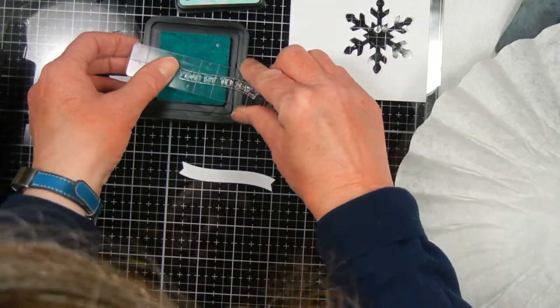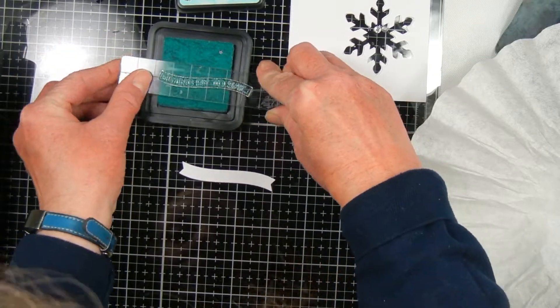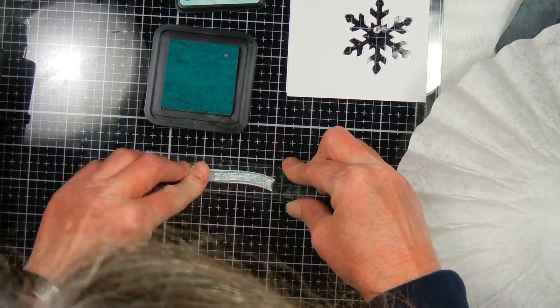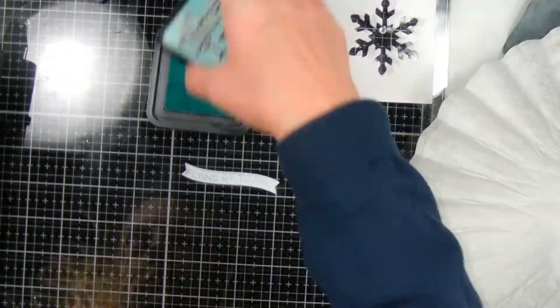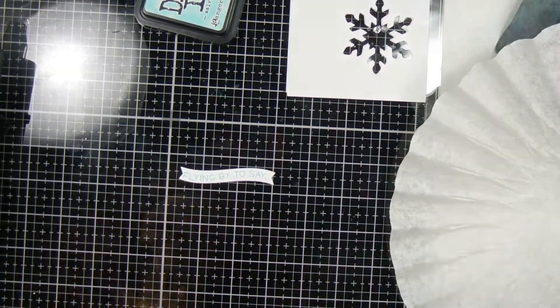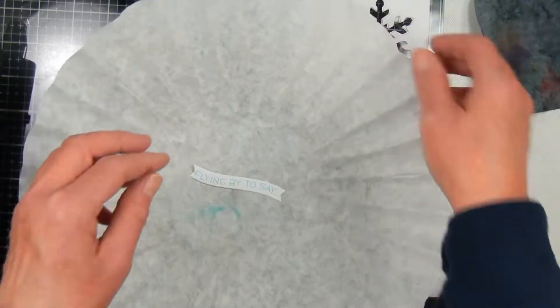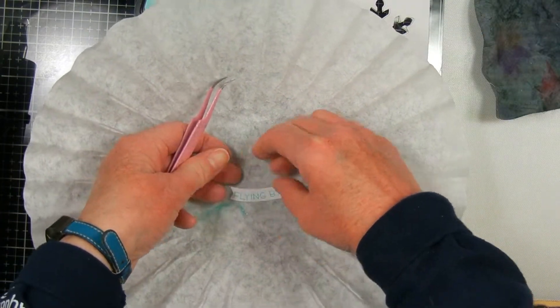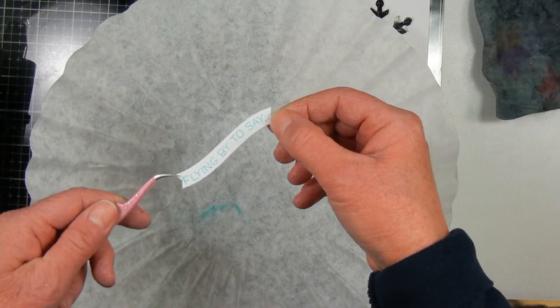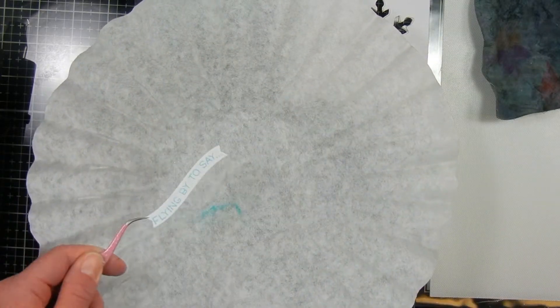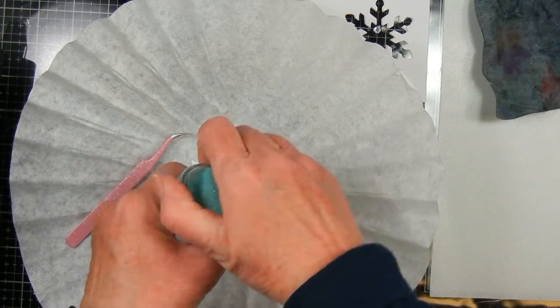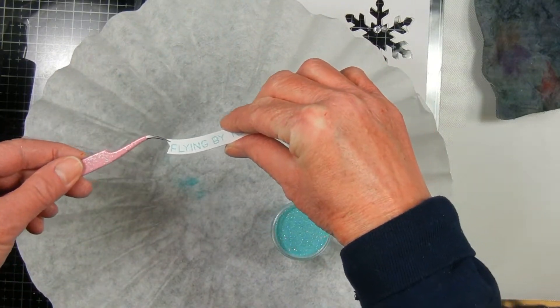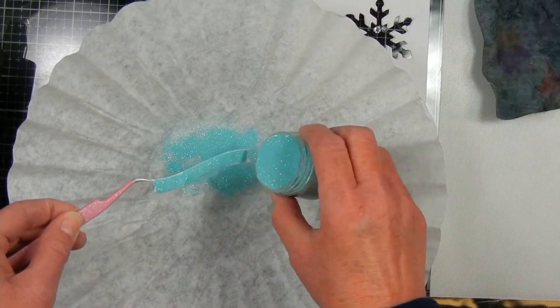For the sentiment I cut out some regular white card stock with my Lawn Fawn simple banner die, and I'm using their simple sayings. This one says flying by to say, which I thought would go great with the snow fairy. On the inside you could put happy birthday, saying hello, thinking of you, or any sentiment.